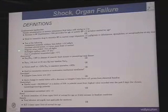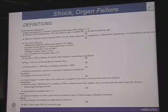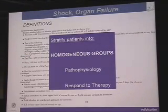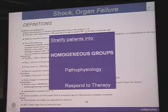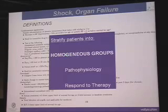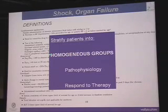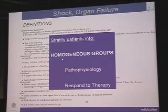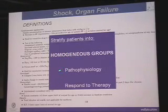For organ failure, we have these definitions that have been described, but we would like to have patients that could be homogenous groups — but that is not the reality. The question is that we don't have homogenous groups. So maybe in the future we will have some definitions for those non-homogenous groups, and we could stratify those subgroups based on pathophysiology and response to therapy.